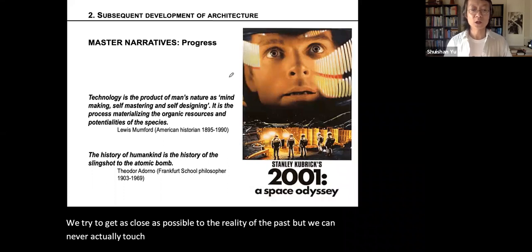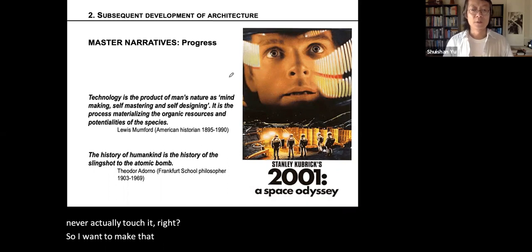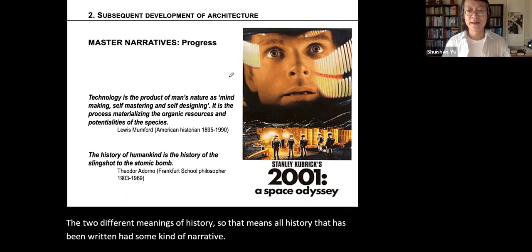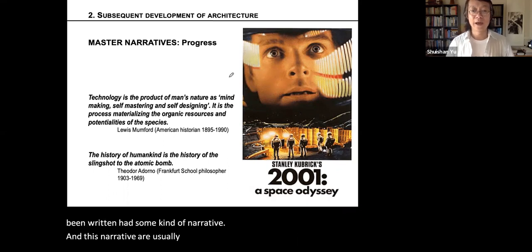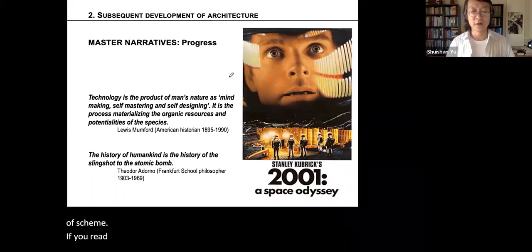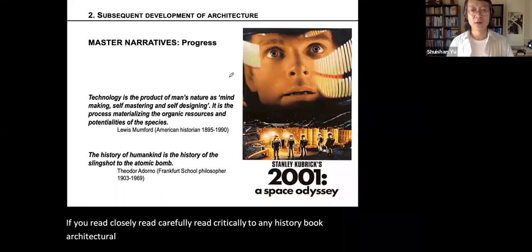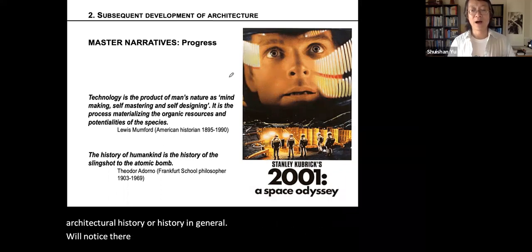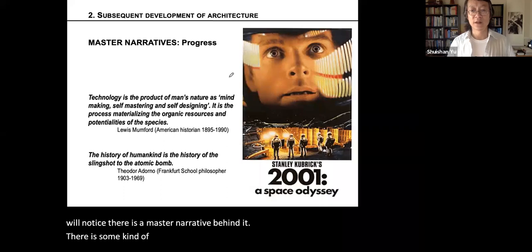Whatever is written in a book does not equal whatever happened in the past. It is a record of the past — we try to get as close as possible to the reality of the past, but we can never actually touch it. All history that has been written has some kind of narrative, and these narratives are usually not random — they follow some kind of scheme. If you read critically any history book, architectural or otherwise, you will notice there is a master narrative behind it, some kind of logic that the history book is trying to construct.